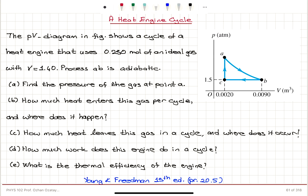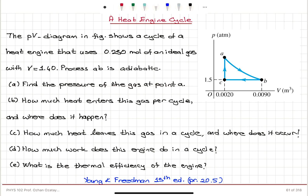A heat engine cycle. The PV diagram in the figure shows a cycle of a heat engine that uses 0.25 moles of an ideal gas with gamma equal to 1.40. Process A to B is adiabatic. Part A: find the pressure of the gas at point A. Part B: how much heat enters this gas per cycle and where does it happen? Part C: how much heat leaves this gas in a cycle and where does it occur? Part D: how much work does this engine do in a cycle? And Part E: what is the thermal efficiency of the engine?